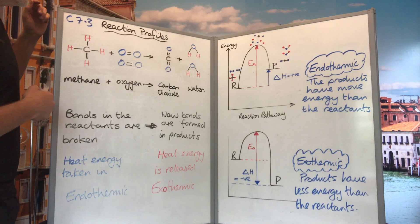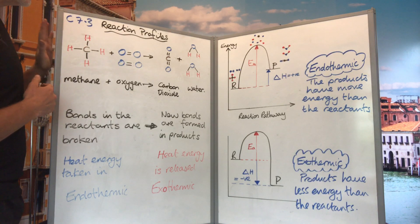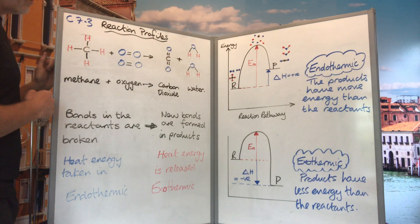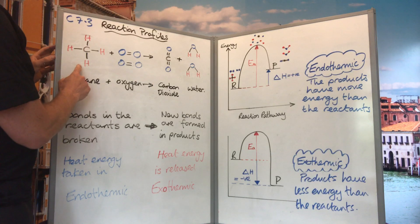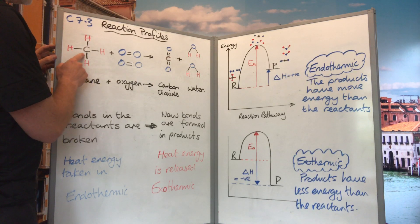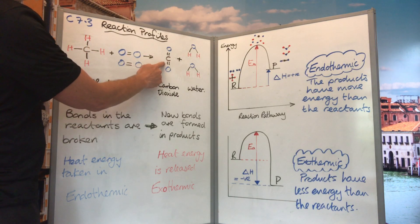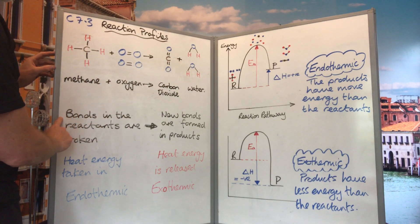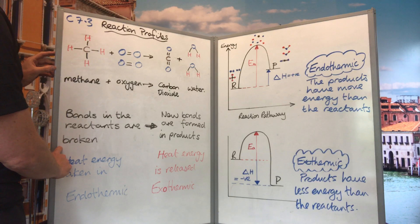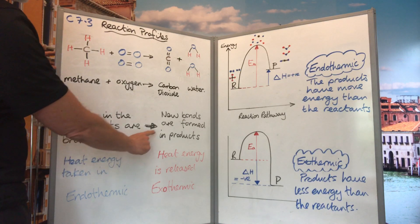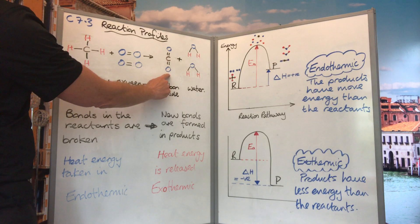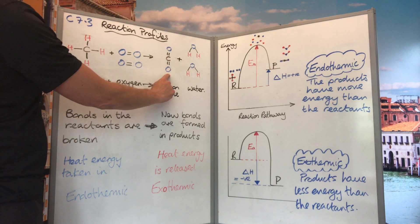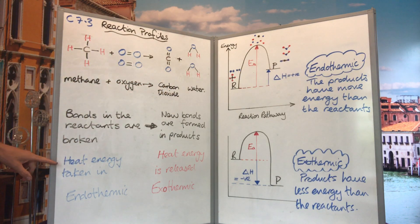We don't need to worry too much about that at the moment — just appreciate that they have different strengths. When we react, we go through a process of breaking these bonds and forming new ones. Bonds in the reactants have to be broken, and new bonds are formed when all of our atoms are rearranged, and that forms our products.